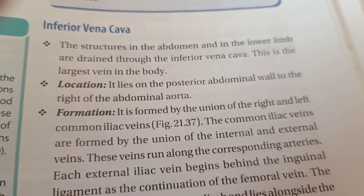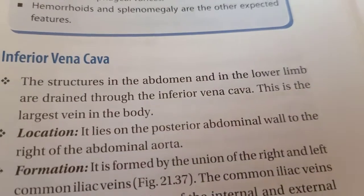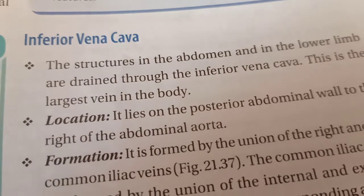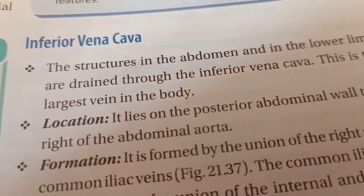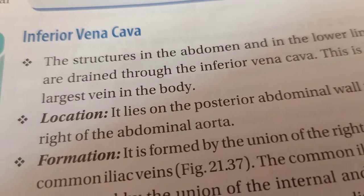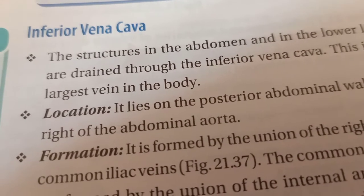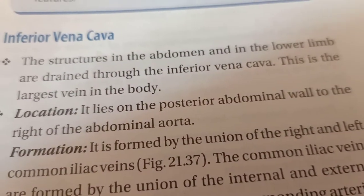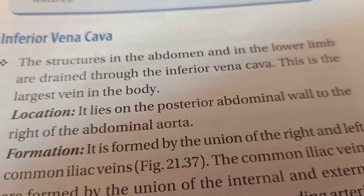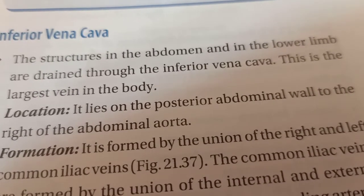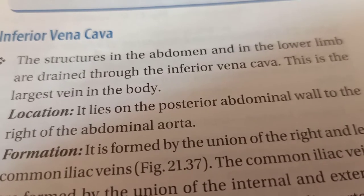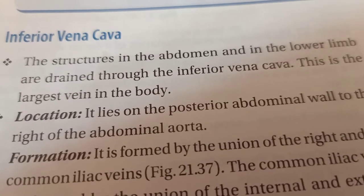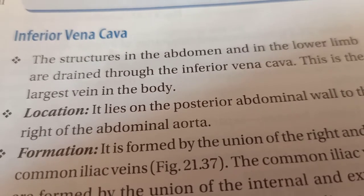Hello students. The next important topic from the posterior abdominal wall which I am going to take is the inferior vena cava. You all know the superior vena cava which I have taught you in the thorax part. Inferior vena cava is one of the largest veins of the body and this vein drains the deoxygenated blood from the structures in the abdomen and in the lower limb, that is below the diaphragm.